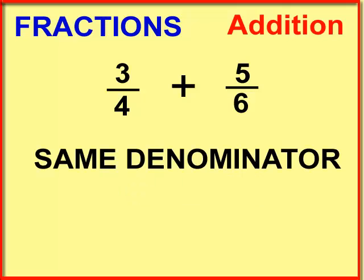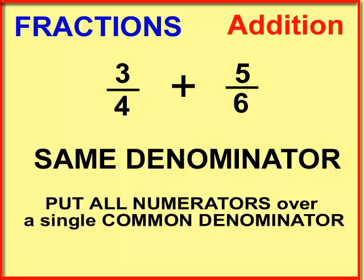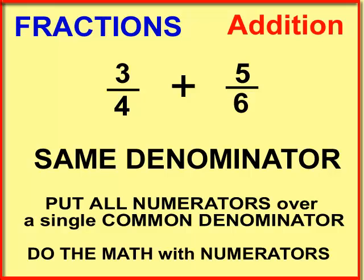Number one rule is you can't add or subtract fractions until you have the same denominator. Once you have the same denominator, you put all the numerators over your new same denominator, just one. You mush them all into a single denominator and then you do the math with the numerators.